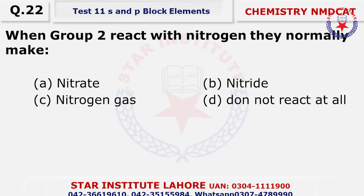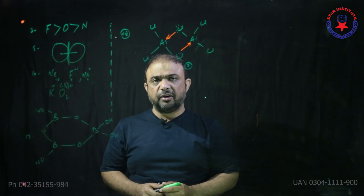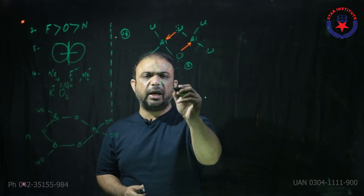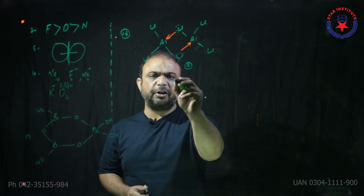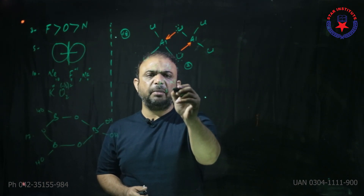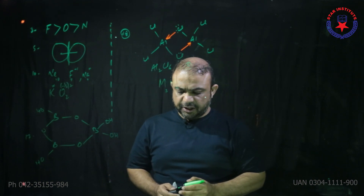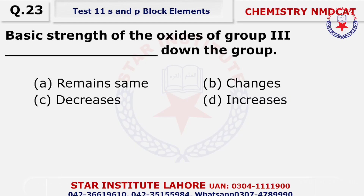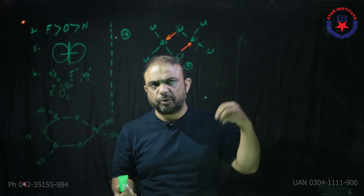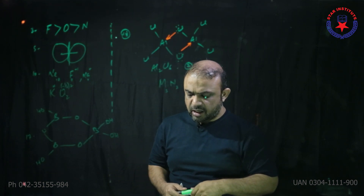Question number 22: Group 2 metals react with nitrogen and normally give nitrides. When a group 2 metal reacts with nitrogen, it makes M₃N₂, which is called a nitride. Question number 23: The basic strength of the oxides of group 3 increases down the group — basic strength always increases as you go from top to bottom. So the choice is D.